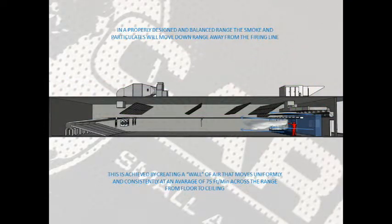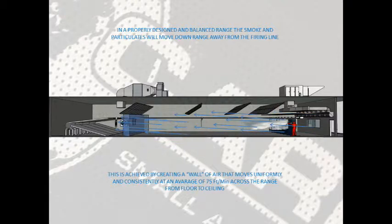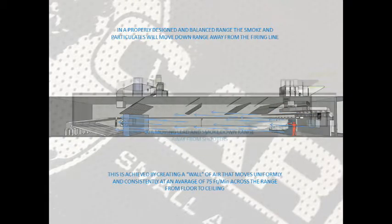In the properly designed and balanced range, the smoke and particulates will move down range away from the firing line. This is achieved by creating a wall of air that moves uniformly and consistently at 75 feet per minute across the range from floor to ceiling with little to no turbulence.